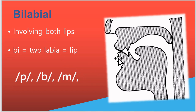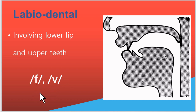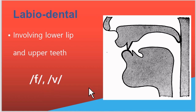Bilabial means involving two lips — labia means lips. Labiodental sounds are produced when the lower lip presses against the upper teeth and some stricture is created. The sounds in English labeled as labiodental are the f sound and v sound. Remember these are not the letters f and v — those are letters of the English alphabet. The symbols between slashes are sounds.